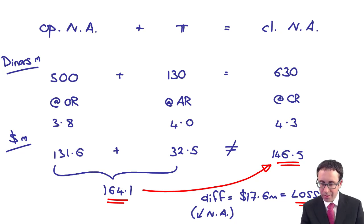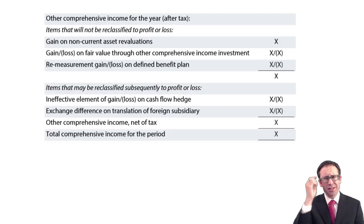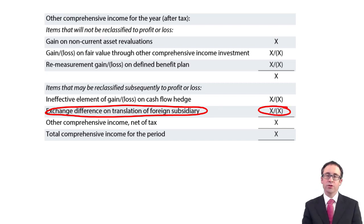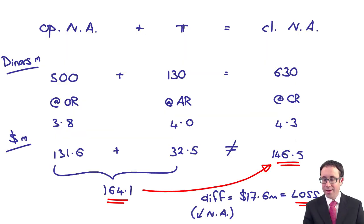Where does that go? Well, if you go back into one of the earlier chapters, I think it might be the third chapter on our financial statements, you've got your statement of profit or loss and other comprehensive income. And right at the bottom of your statement of profit or loss and other comprehensive income, you've got your exchange difference on translation of the foreign subsidiary.